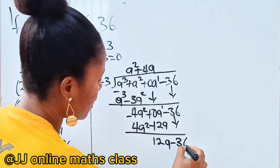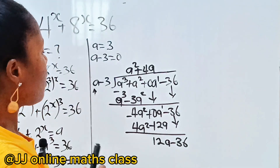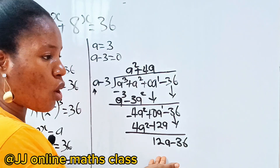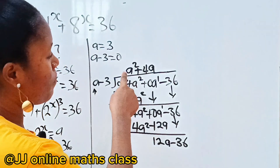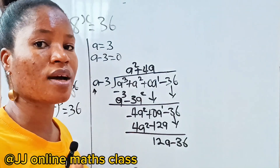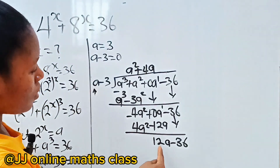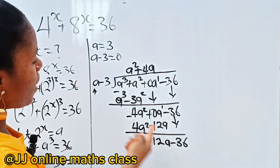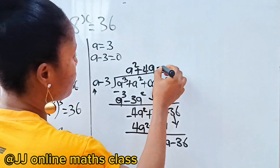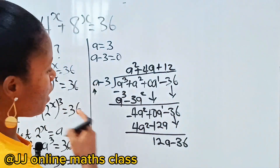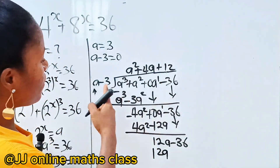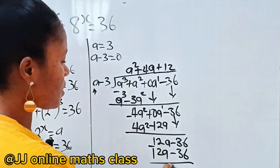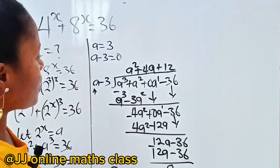Next: 4a² divided by a gives 4a. Then 4a·(a - 3) = 4a² - 12a. Subtracting gives 0 + 12a. Bringing down -36 gives 12a - 36. Finally: 12a divided by a gives 12. Then 12·(a - 3) = 12a - 36. Subtracting gives a remainder of 0.